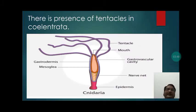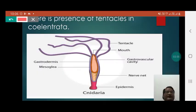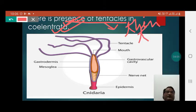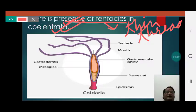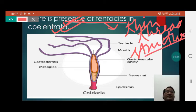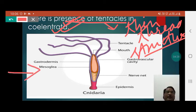There is presence of tentacles in Coelenterata. Tentacles remain present in the Coelenterata. Tentacles are thin thread-like structures, the main work of which is in movement and in capturing food. If you concentrate on this picture, then you will be able to notice the tentacles.